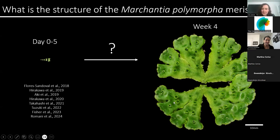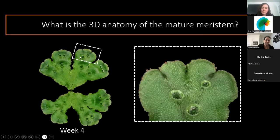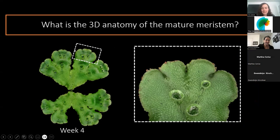In my research, I'm interested in understanding how the branching architectures of the mature plants are formed by meristem regulation. And the first aim of my project was to describe the 3D anatomy in the mature meristem. In order to do this, I grew wild-type plants for four weeks in white light and harvested the apices of the plant.